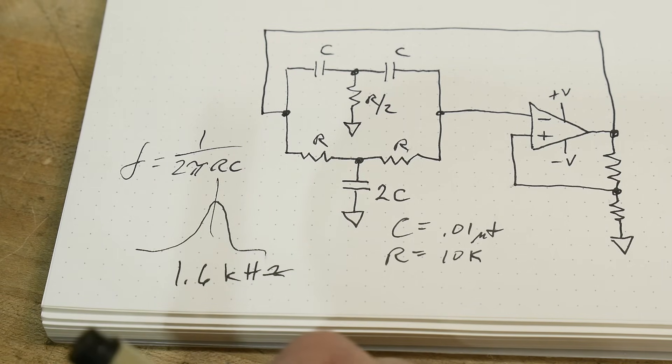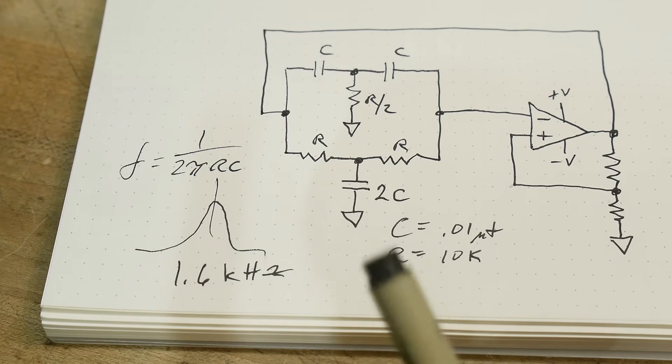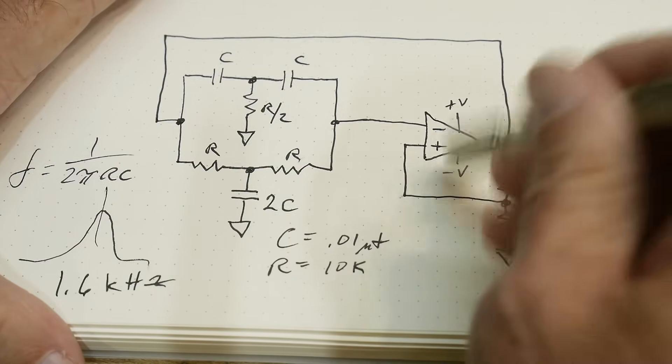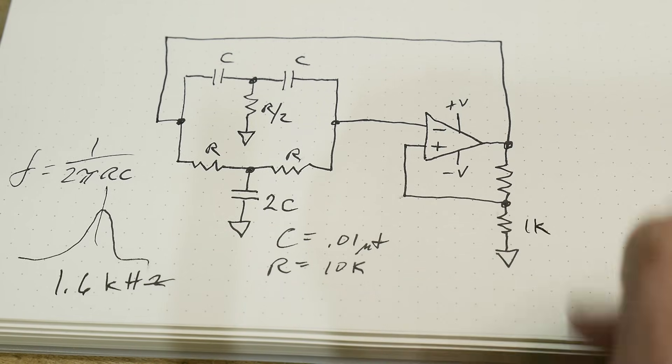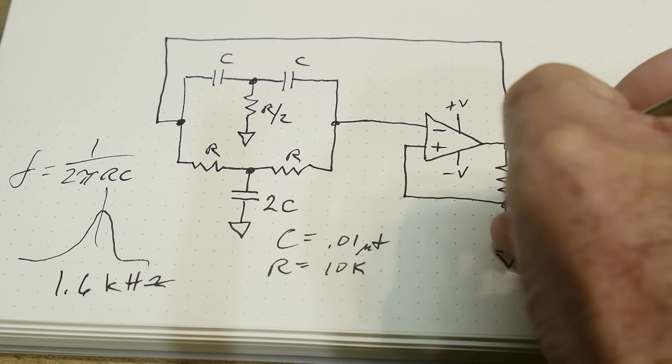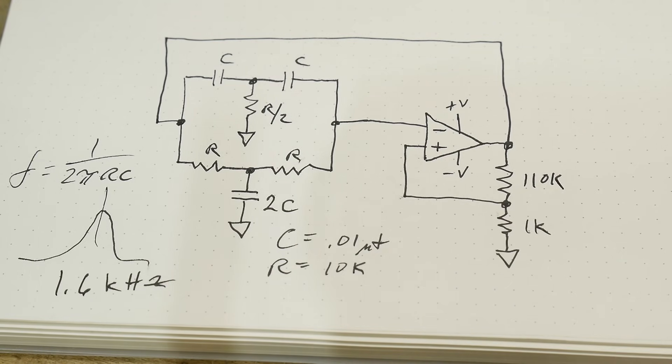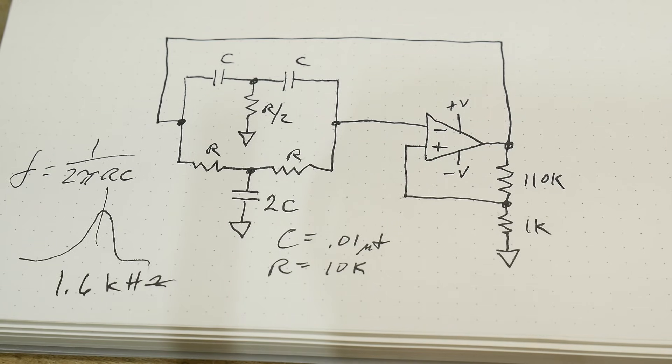There's our calculation, 1.6 kilohertz. Let's go ahead and put some values over here too. 1k and I happen to have 110k over here. We need some gain. So 110k and 1k.